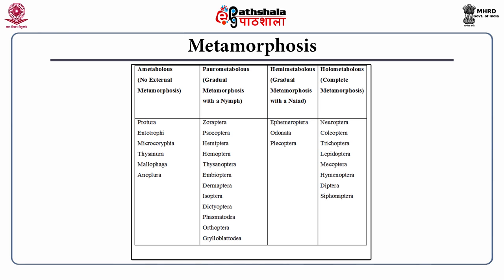Hemimetabolous metamorphosis is gradual metamorphosis with a larval naiad form; the orders include Ephemeroptera, Odonata and Plecoptera. In holometabolous metamorphosis the life cycle is complete with larval, pupal and adult forms; the orders include Neuroptera, Coleoptera, Trichoptera, Lepidoptera, Mecoptera, Hymenoptera, Diptera and Siphonaptera.